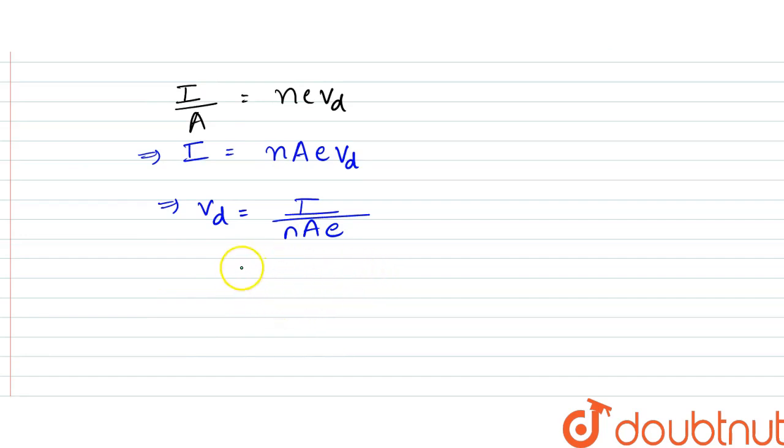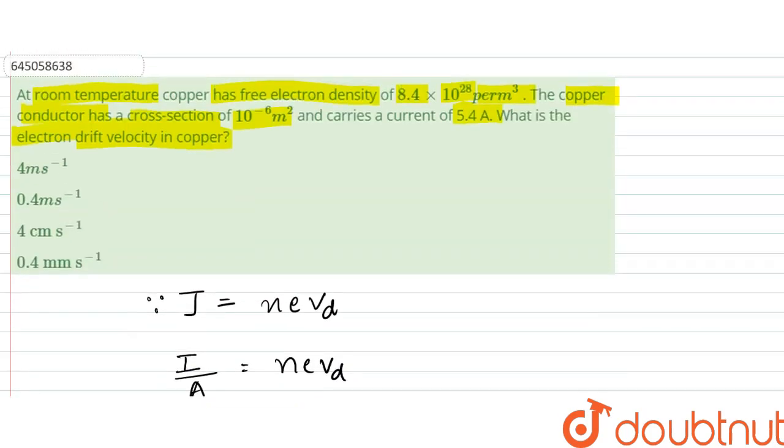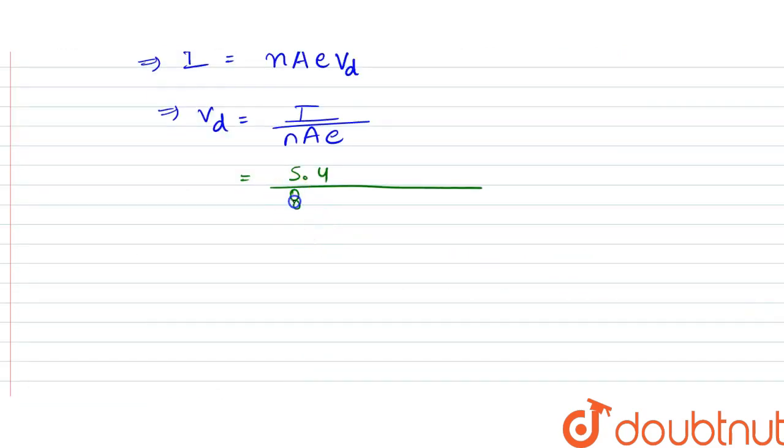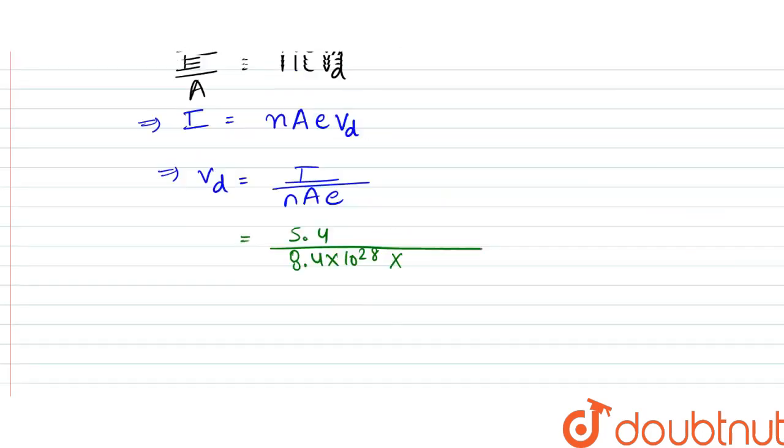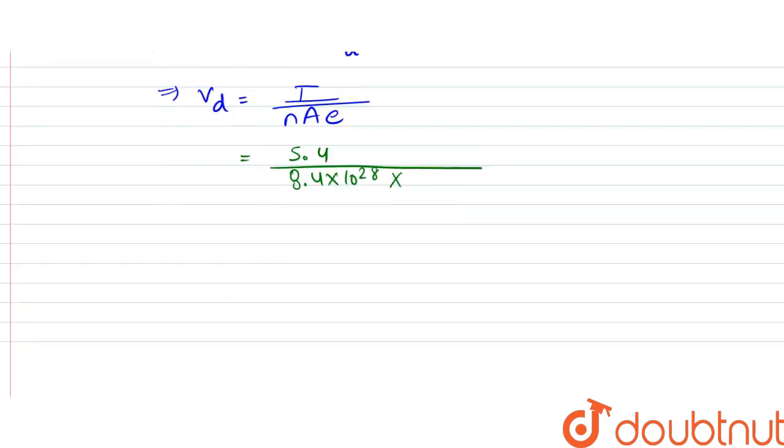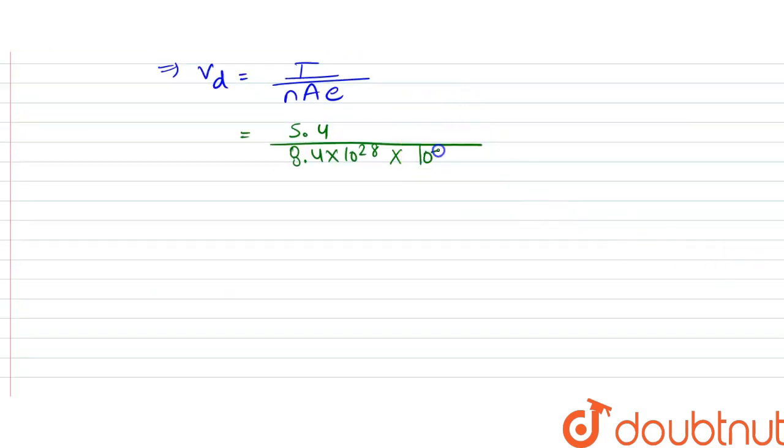The number of electrons that are 8.4 into 10 to power 28, into the area is given as 10 to power minus 6, into electrons, so that is 1.6 into 10 to power minus 19. So that would be equal to, when we calculate this, this turns out to be equal to 4 into 10 to power minus 4 meter per second.